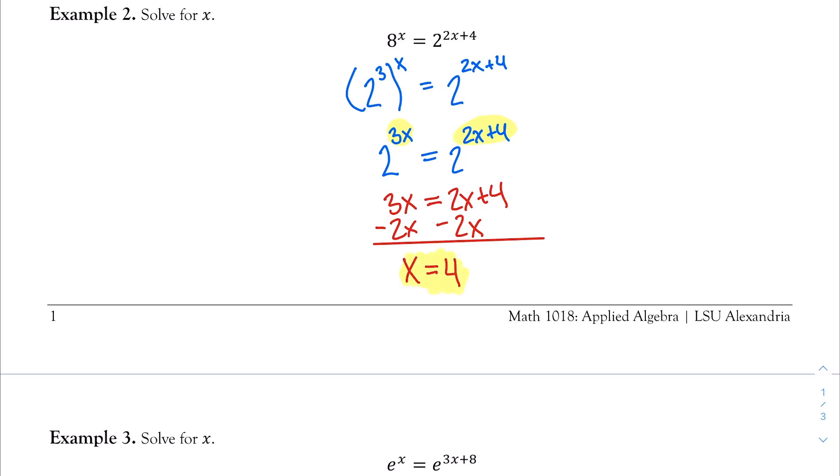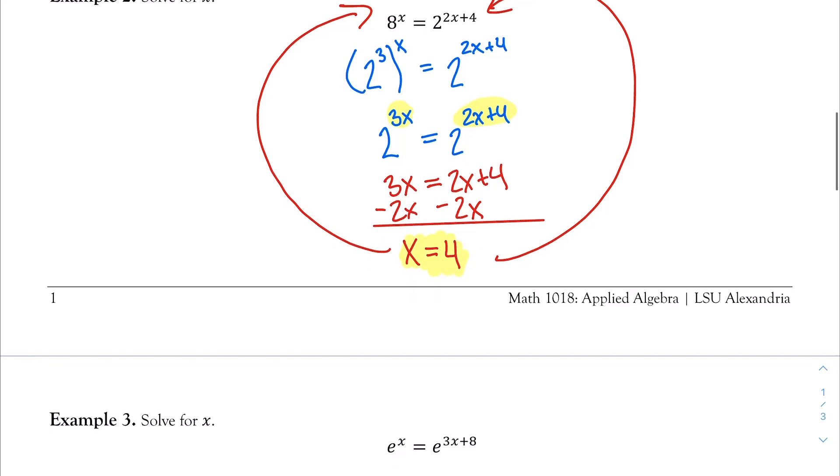And once again, if you want, you can always check your answer by plugging x equal to 4 back into your equation. We do get that 8 to the 4th power is equal to 2 to the 2 times 4 plus 4 power. Once again, we are trying to get the same base.